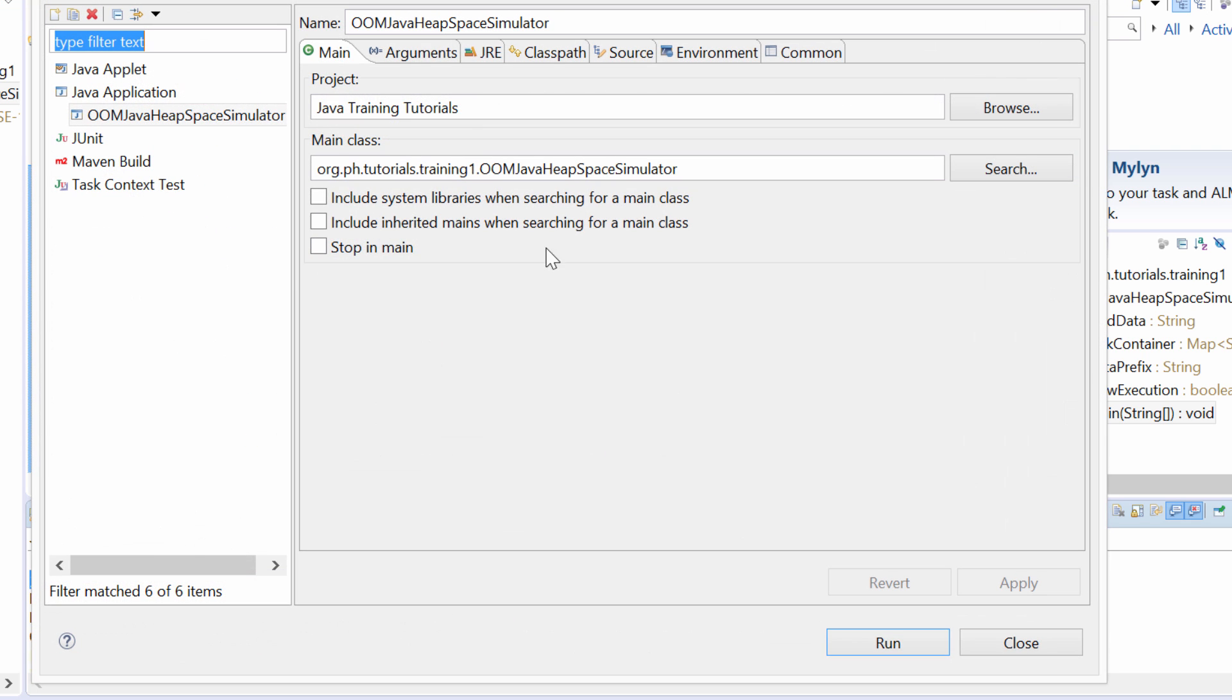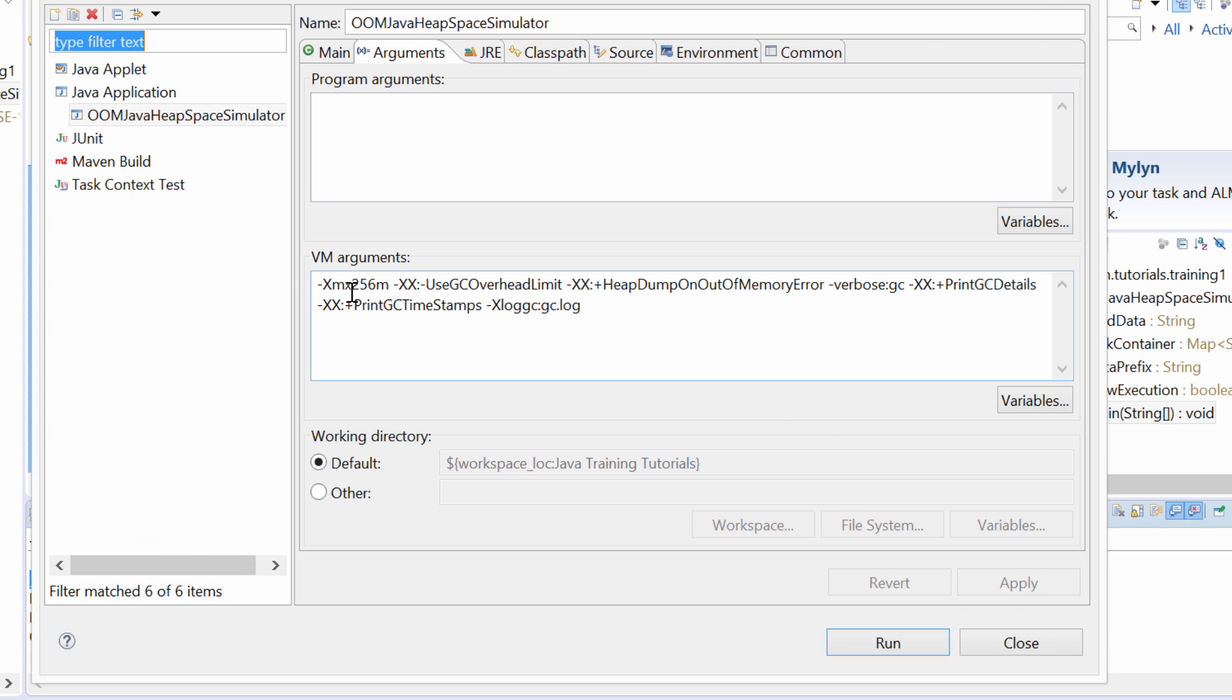If I show you the capacity sizing I was discussing earlier - I set up a heap capacity of only 256 megabytes. I enabled the Verbose GC log that we'll be able to see later.